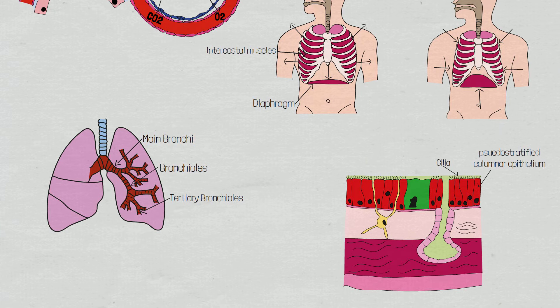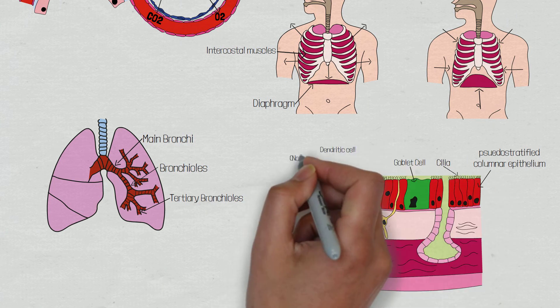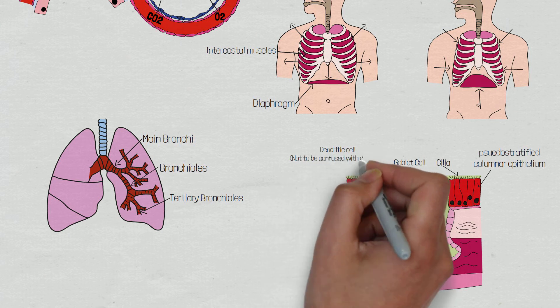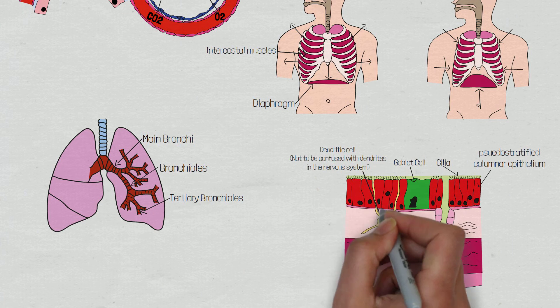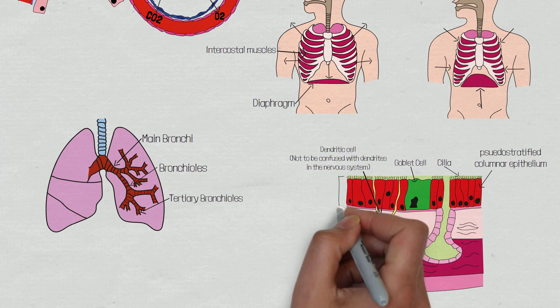This is a pulmonary defense system that traps pathogens and dirt and beats them up the respiratory tract where they can be coughed up or swallowed. Amongst these epithelial cells are other cells, such as goblet cells, which secrete the mucus. There are dendritic cells, which are part of the innate immune system. There are also afferent nerve endings of the vagus nerve situated along the basement membrane of these cells, which is important when we go on to discuss the treatment.